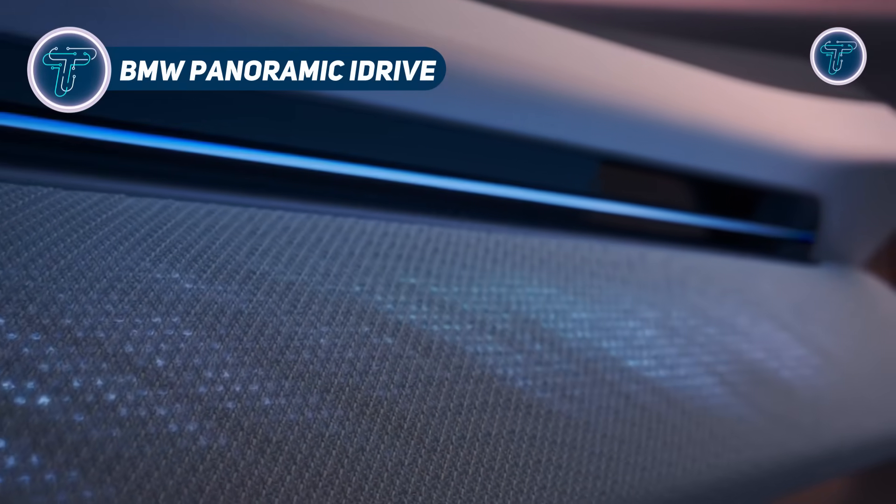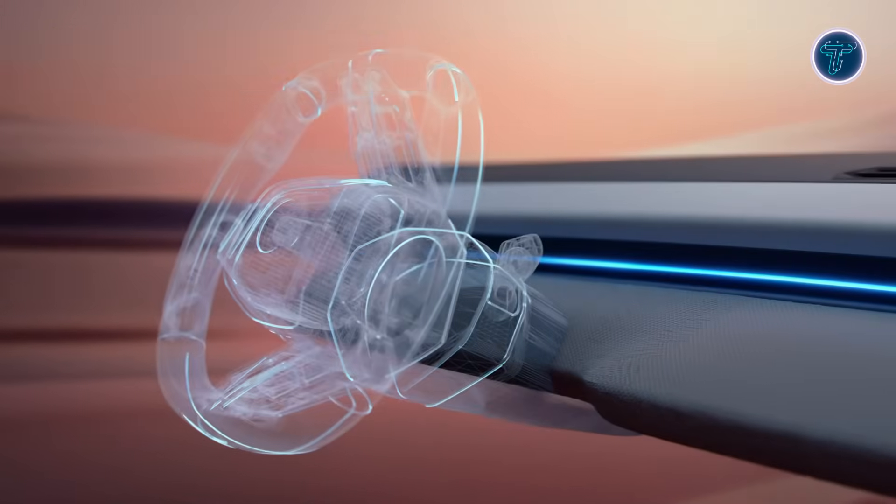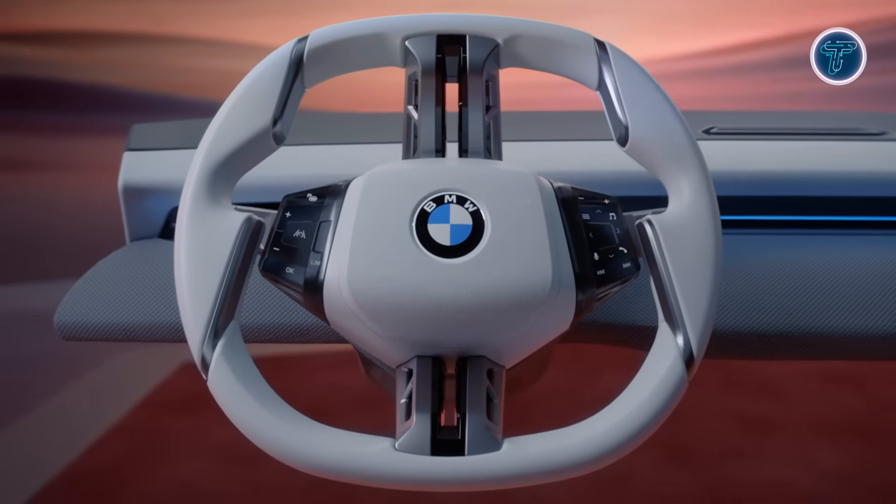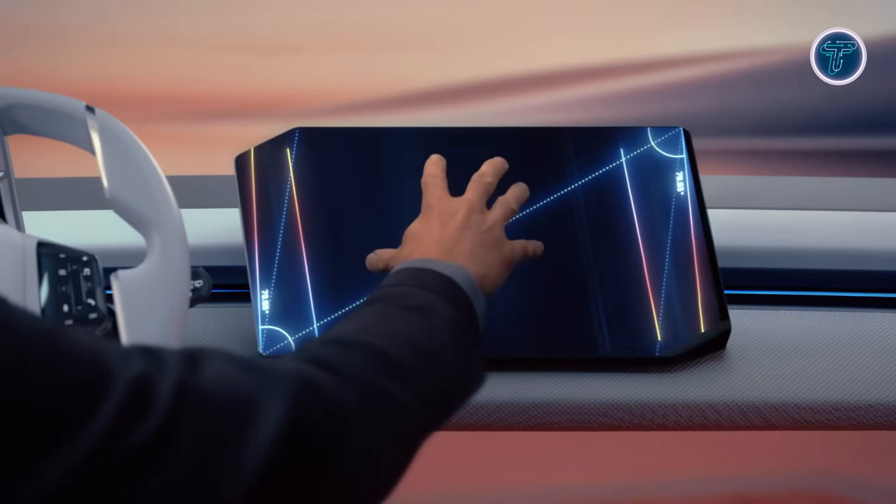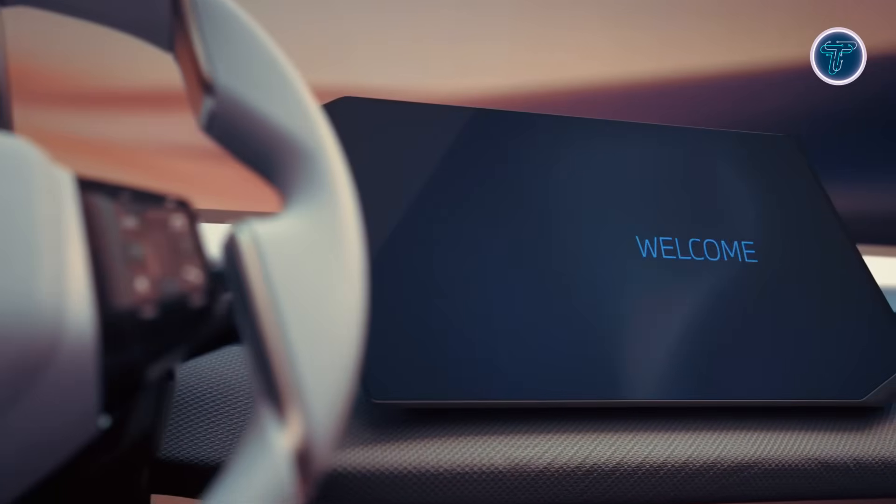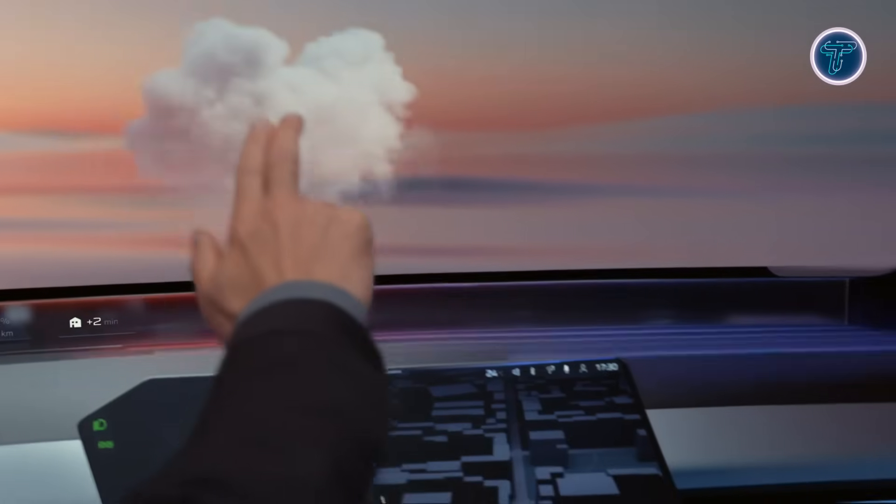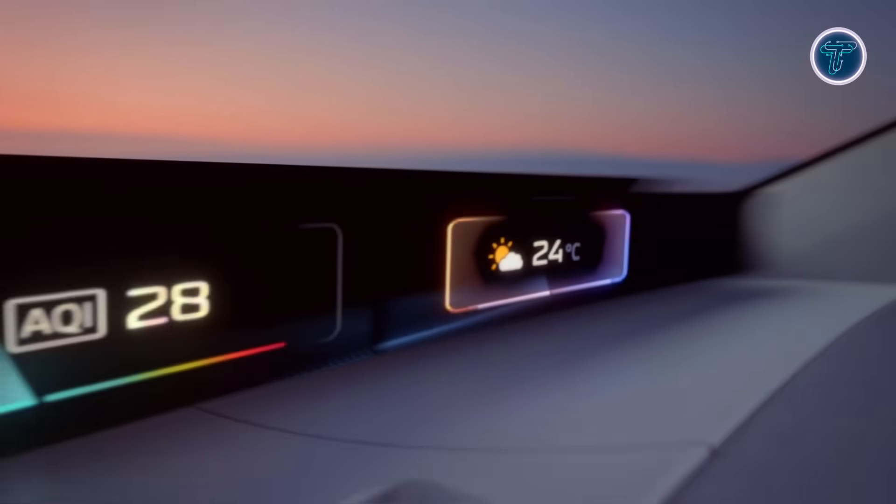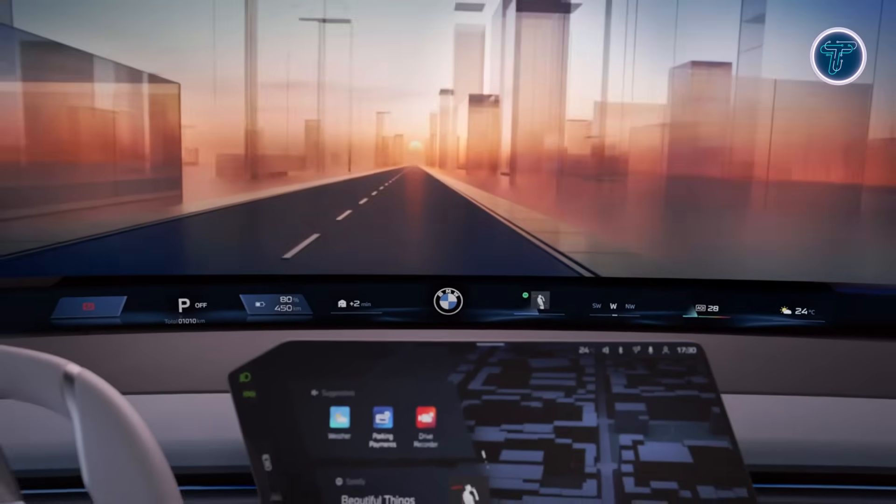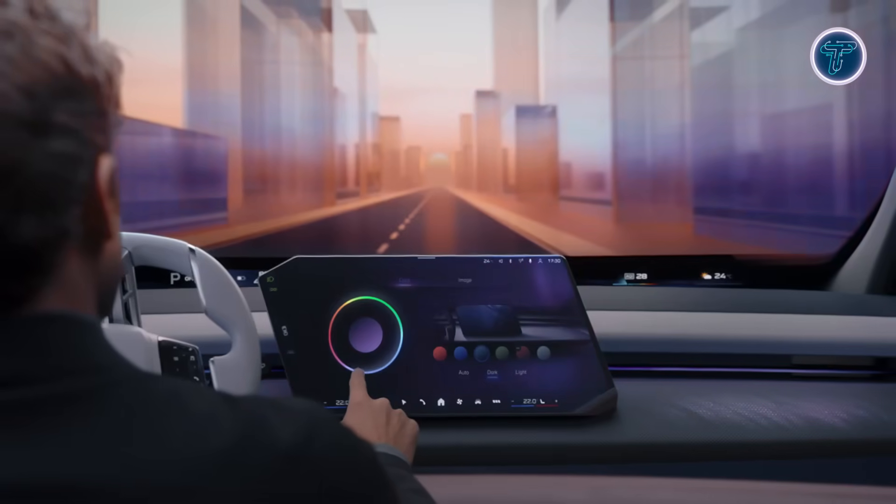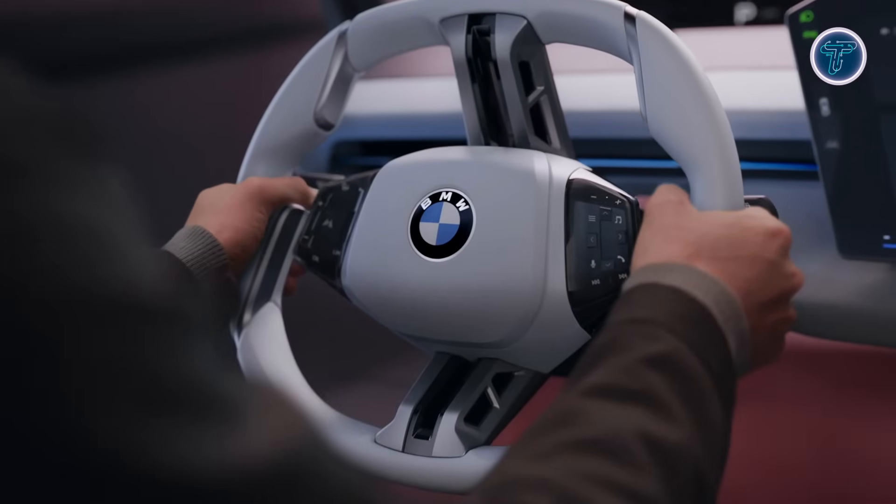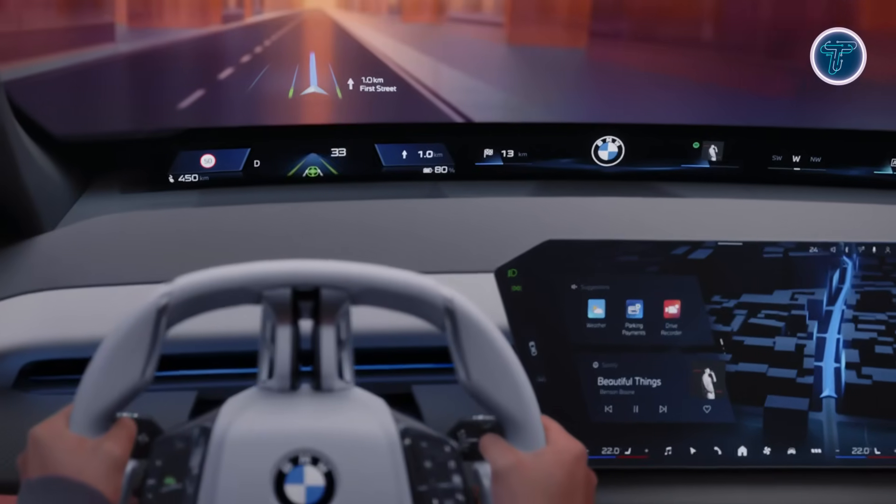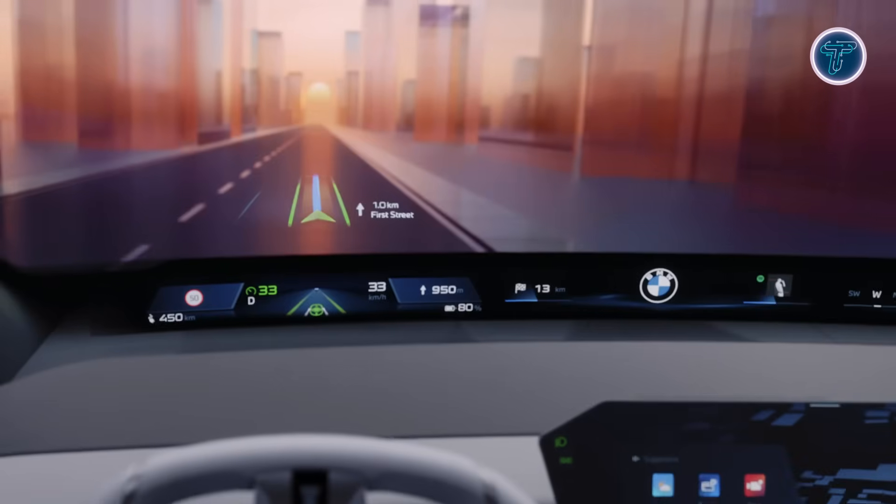BMW Panoramic iDrive. BMW's Panoramic iDrive is an advanced display system that redefines how drivers interact with vehicle information. At its core is the Panoramic Vision System, a wide head-up display that stretches across the lower windshield from one side of the dashboard to the other. It presents essential data such as speed, navigation, and media within the driver's natural field of view, improving safety and convenience. The interface is divided into six sections that can be customized to suit user preferences. An additional 3D display layer sits above the main projection, delivering real-time visual guidance and driving assistance cues with added depth.